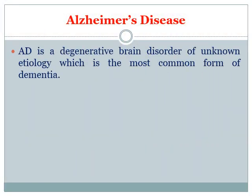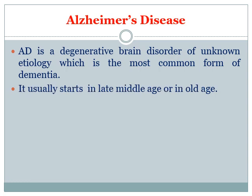First of all, let me tell you what is Alzheimer's disease. Alzheimer's disease is a CNS disorder or brain disorder in which there is progressive degeneration of neurons. Unfortunately, the exact cause of this disorder is still unknown. It is the common form of dementia, that is, loss of memory. This disease generally starts in the late middle age or in old age.